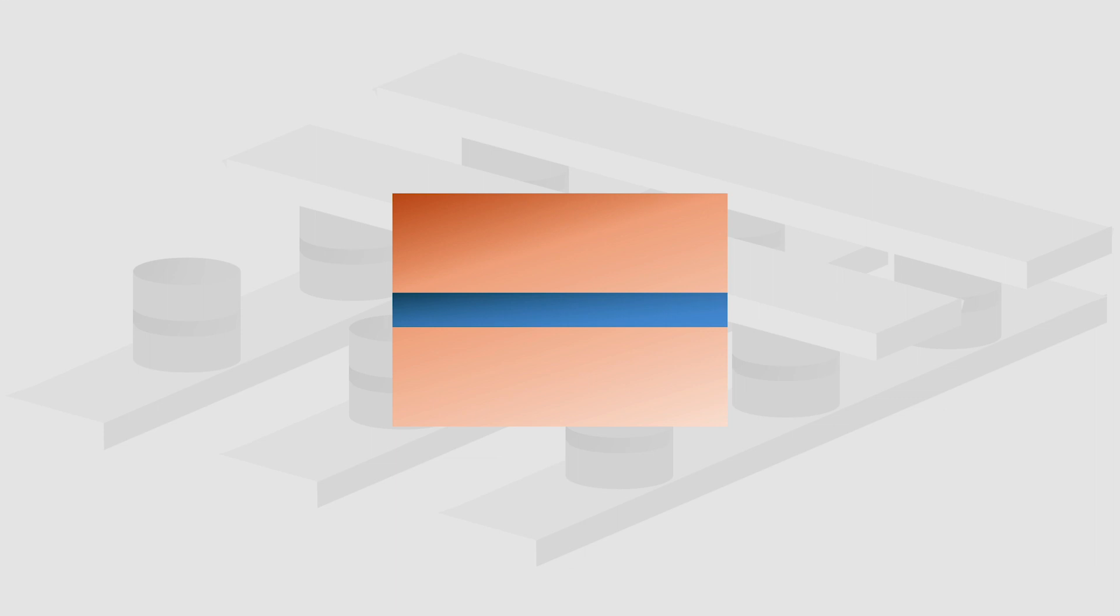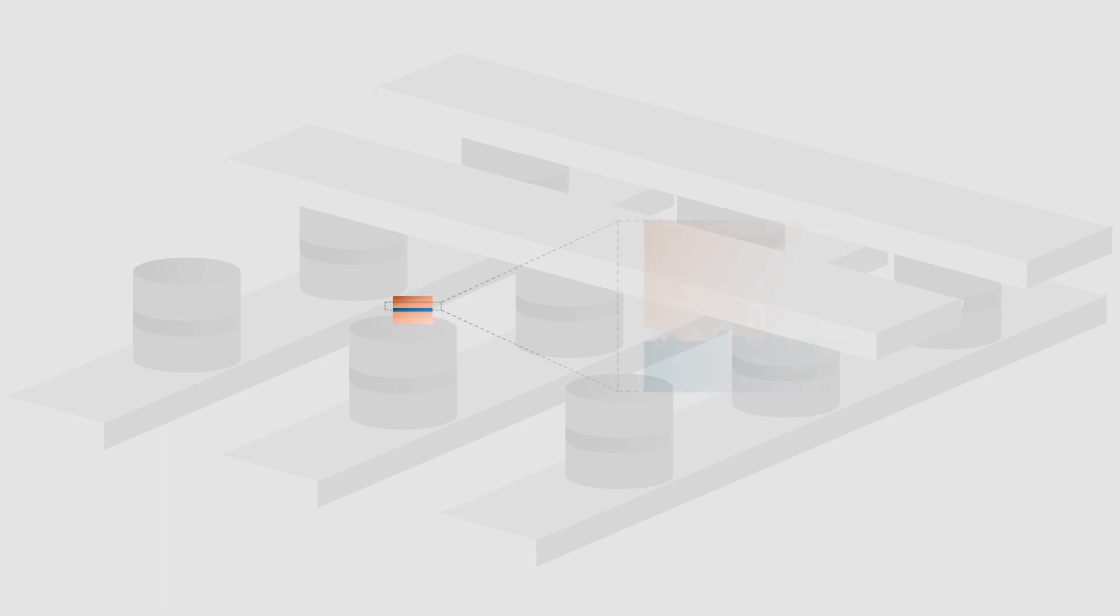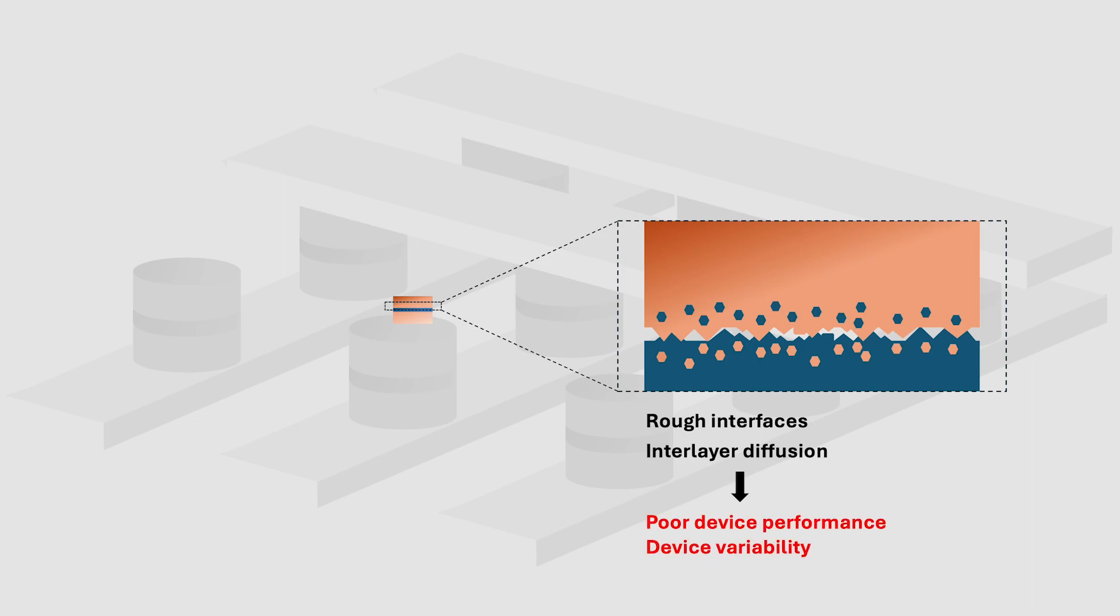Presently, MTJs are built using bulk magnetic materials. However, when these devices are shrunk to achieve advanced technology nodes, they start facing issues. The interface roughness becomes comparable to individual layer thickness and there is significant interlayer diffusion of atomic species. This results in degraded device performance and device-to-device variability.